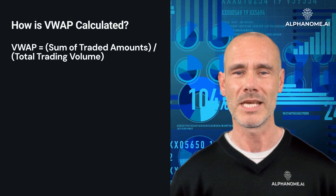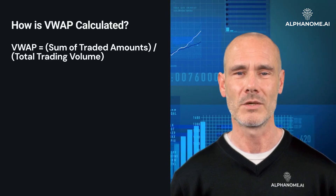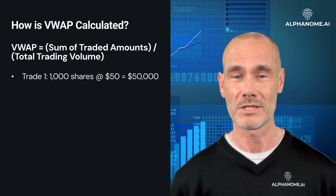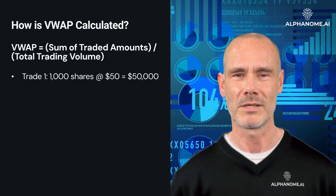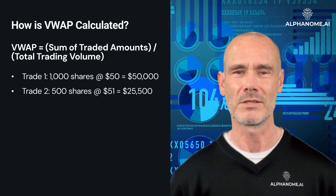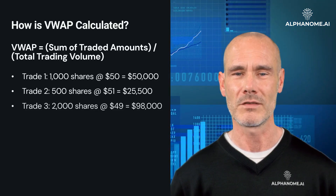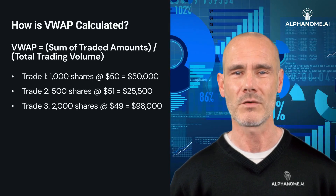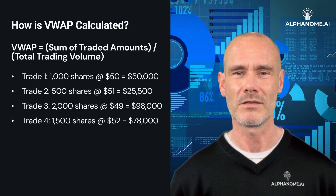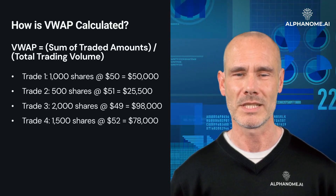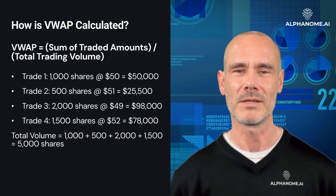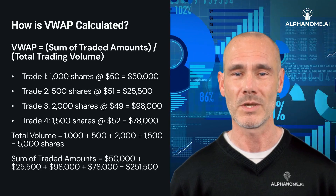For example, let's calculate the VWAP for ABC stock over a trading day with the following price and volume data. Trade 1: 1,000 shares at $50 equals $50,000. Trade 2: 500 shares at $51 equals $25,500. Trade 3: 2,000 shares at $49 equals $98,000. Trade 4: 1,500 shares at $52 equals $78,000. Total volume equals 5,000 shares, and the sum of traded amounts equals $251,500.